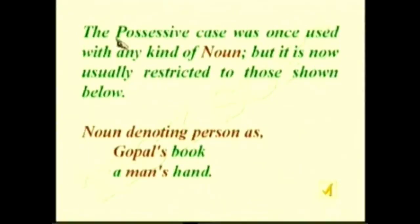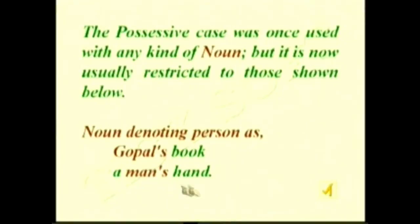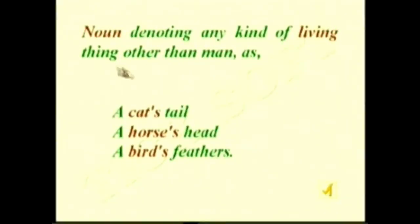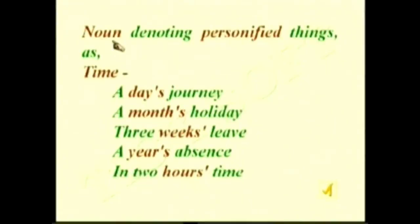The possessive case was once used with any kind of noun, but it is now usually restricted to: nouns denoting persons, as 'Gopal's book,' 'a man's hand'; nouns denoting any kind of living thing other than man, as 'a cat's tail,' 'a horse's head,' 'a bird's feathers'; and nouns denoting personified things such as time: 'a day's journey,' 'a month's holiday,' 'three weeks' leave,' 'a year's absence,' 'in two hours' time.'